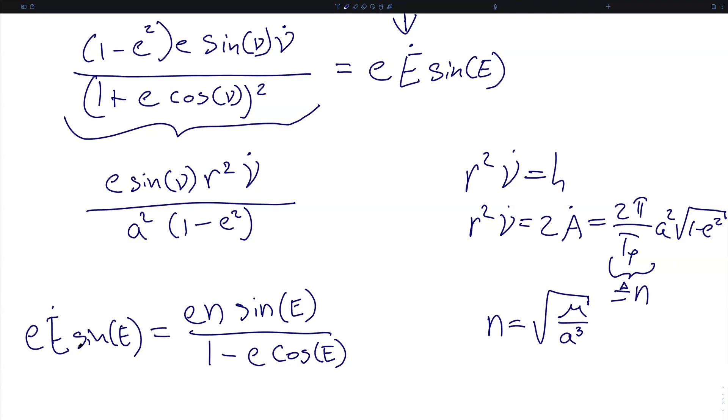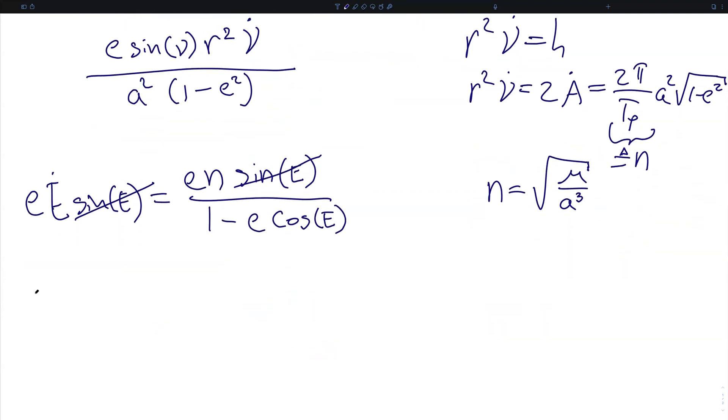And the sine of the eccentric anomaly cancels, and that means that if we also divide through by the eccentricity, we can write the derivative of the eccentric anomaly in time is equal to the mean motion over the quantity 1 minus the eccentricity times the cosine of the eccentric anomaly.